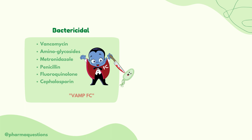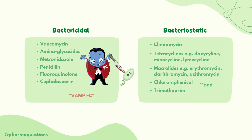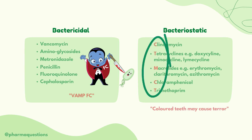Now let's take a look at examples of bacteriostatic antibiotics. We have clindamycin and tetracyclines — some examples of tetracyclines are doxycycline, minocycline, and lymecycline. Then we have macrolides — some examples are erythromycin, clarithromycin, and azithromycin. And lastly we have chloramphenicol. This can be remembered by the mnemonic 'coloured teeth may cause terror'.